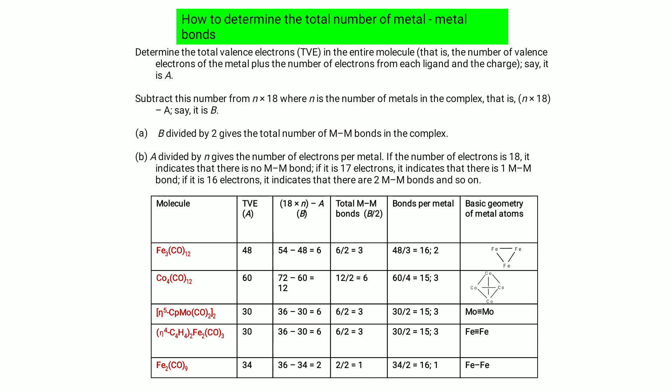Final example: Fe₂(CO)₉. Total valence electrons = 34, two metal atoms. 18 × 2 = 36; 36 − 34 = 2; 2 ÷ 2 = 1 metal-metal bond. The metal geometry is linear.